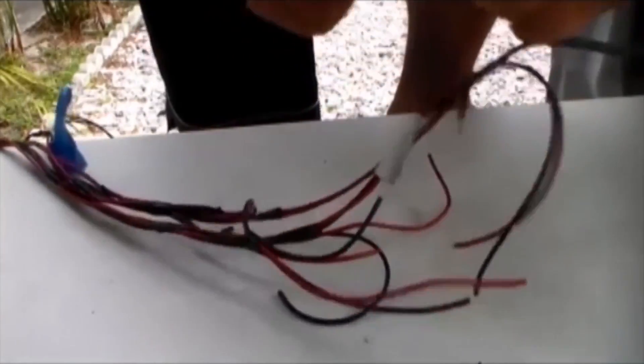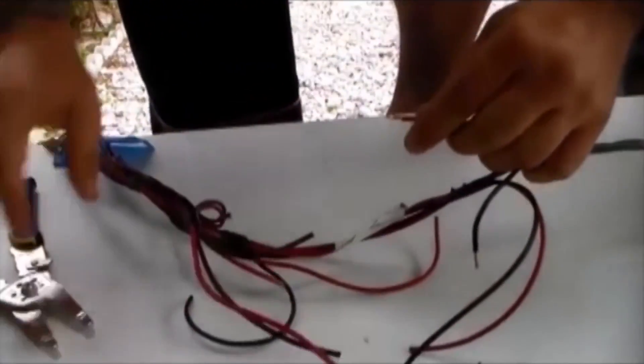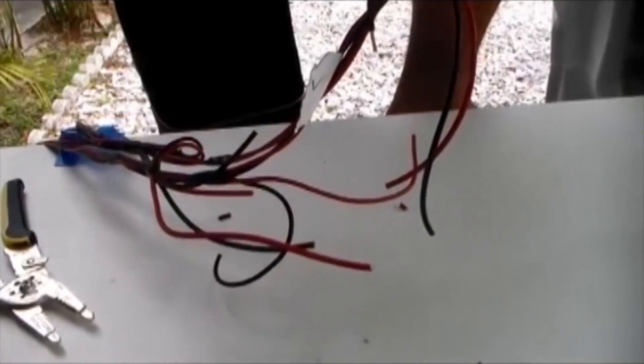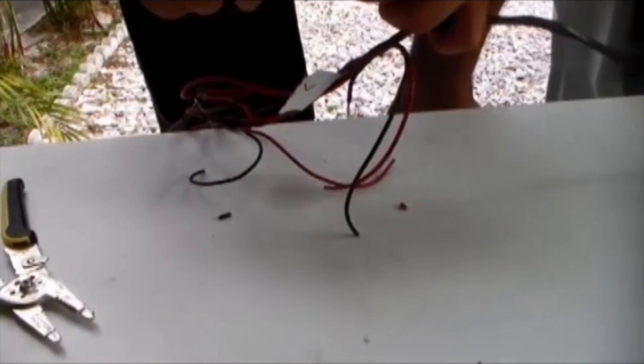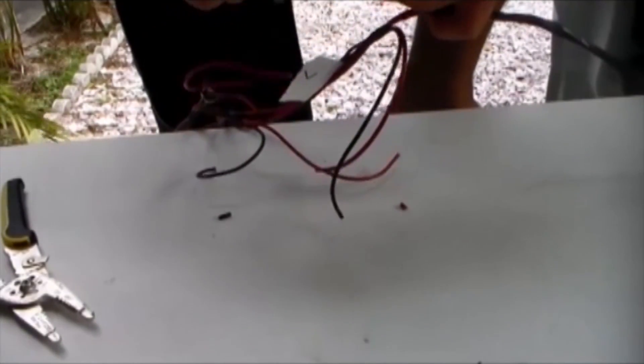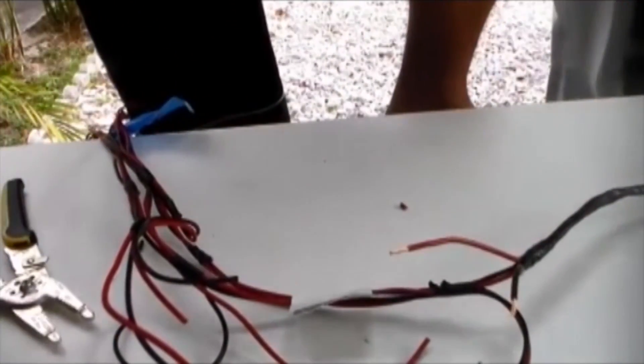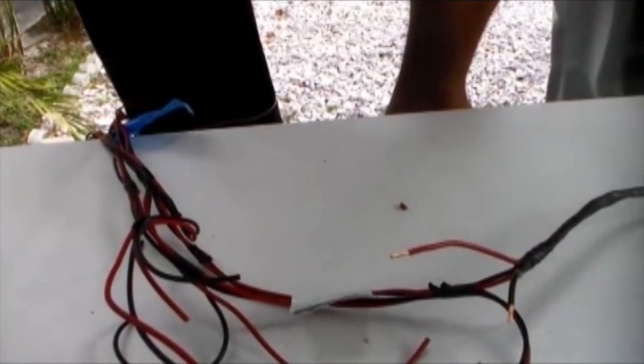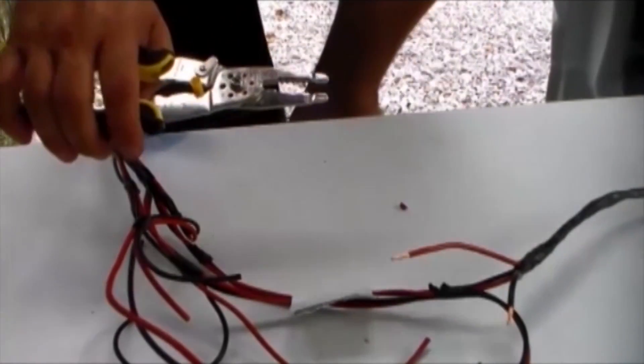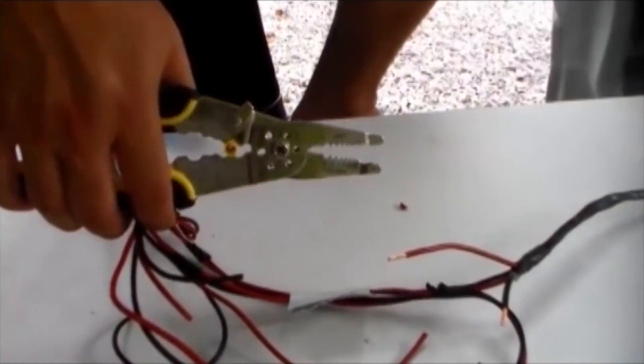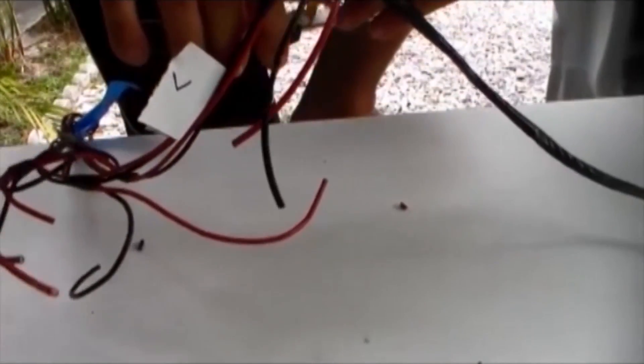Don't strip it back so far that you have exposed wire. And then twist it. Get the right sized butt connector. I'm using yellow because I've got to put so many wires into it, otherwise I would use blue, but I also did another video on this for something more detail.